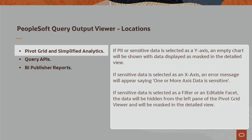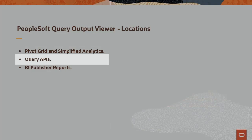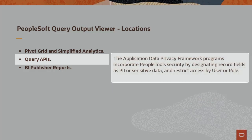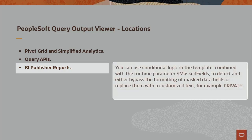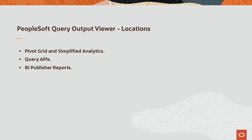If sensitive data is selected as a filter or an editable facet, the data will be hidden from the left pane of the Pivot Grid Viewer and will be masked in the detailed view. When using query APIs to fetch data from a query, the Application Data Privacy Framework programs incorporate PeopleTools security by designating record fields as PI or sensitive data and restrict access by user or role. For BI Publisher reports generated using RTF templates, you can use conditional logic combined with the runtime parameter $masked_fields to detect and either bypass the formatting of masked data fields or replace them with customized text, for example, 'private'. Even if a user is authorized to access certain queries, you can control whether personal data or other sensitive fields are exposed to them when the query executes.